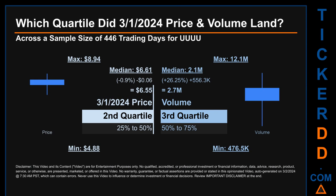Hello, my name is Maria. Which quartile did the 1st of March 2024 price and volume land? Across a sample size of 446 trading days, the maximum end-of-day price for UUUU was $8.94 while the minimum was $4.88. Within that price range, the 1st of March 2024 price of $6.55 landed within the second quartile, putting it within the 25% to 50% range of all sampled end-of-day prices.